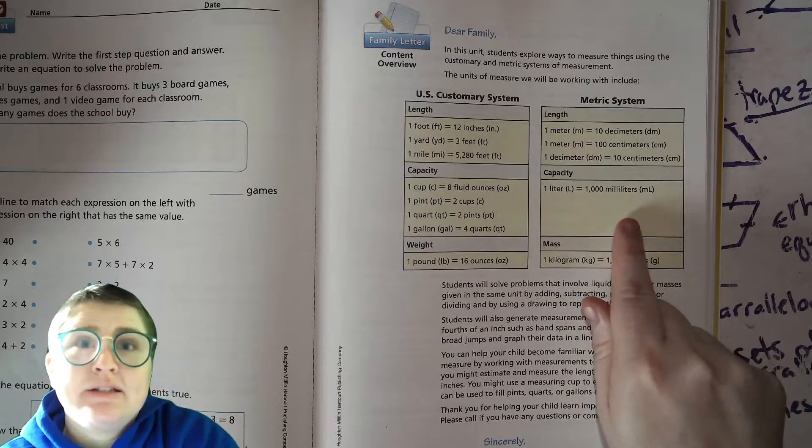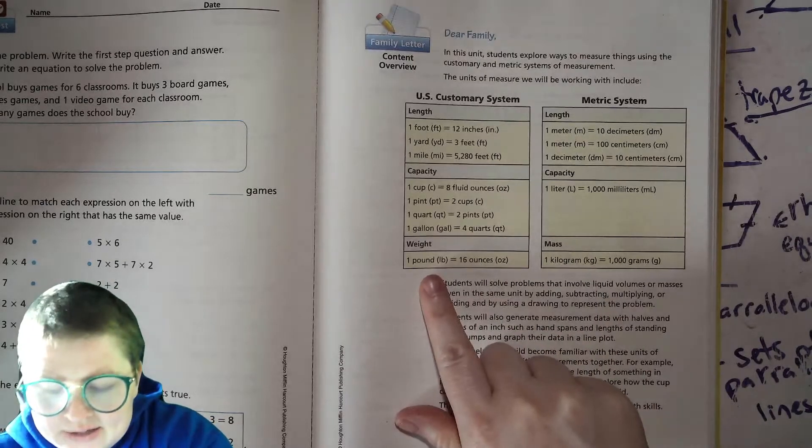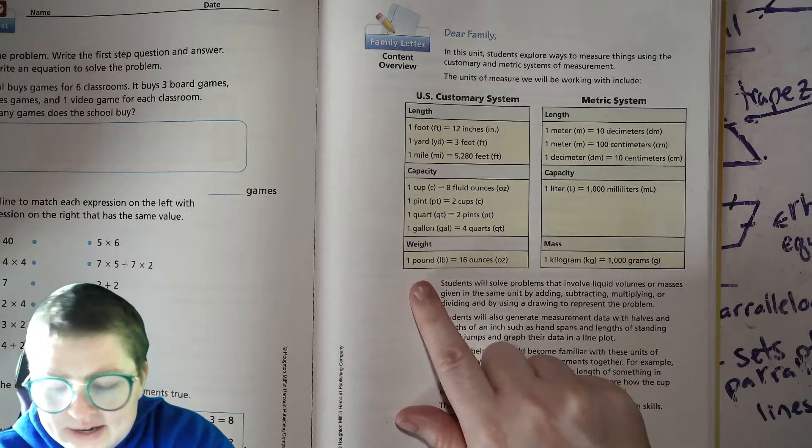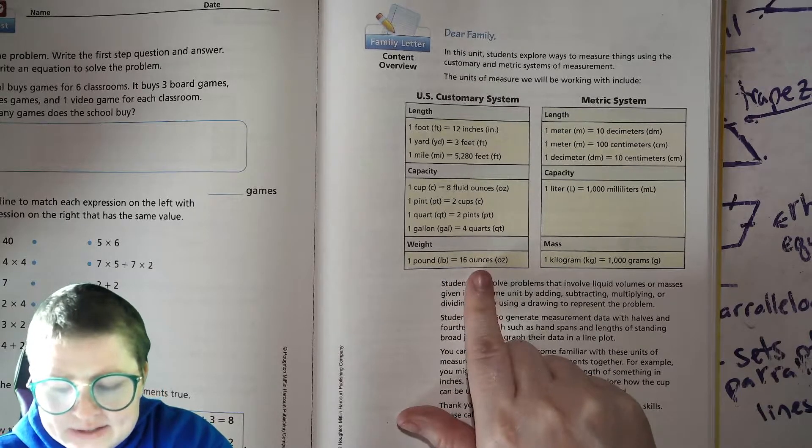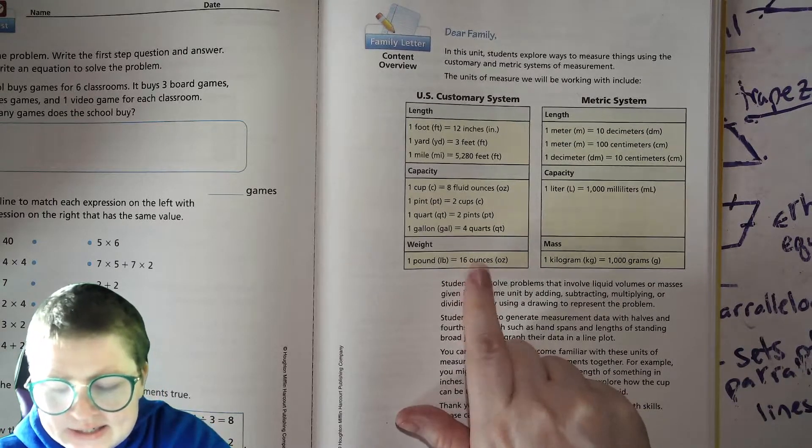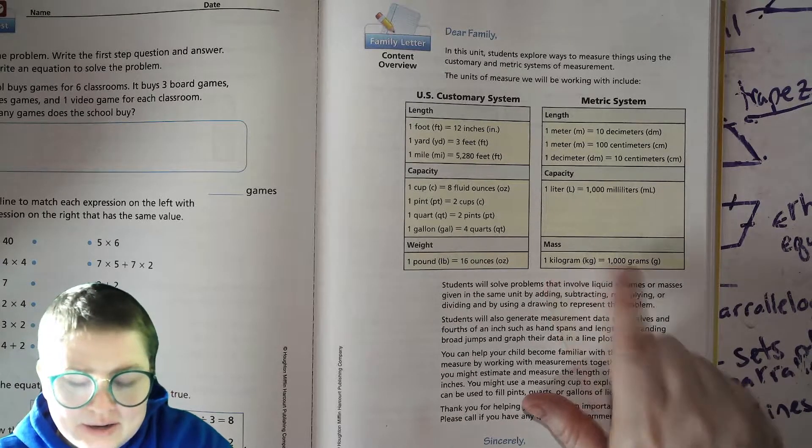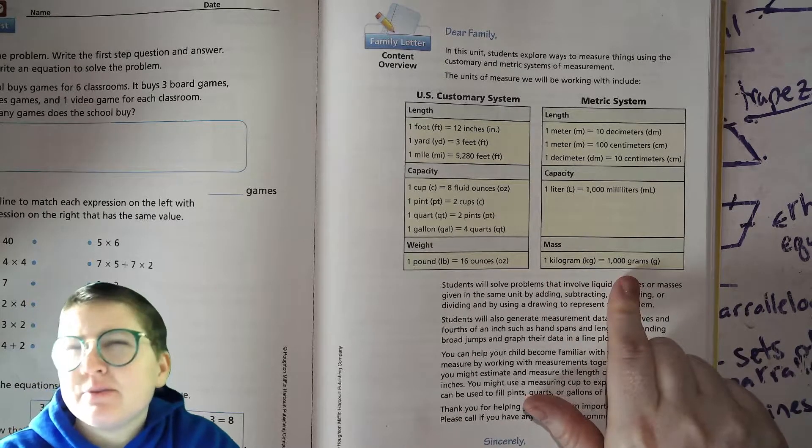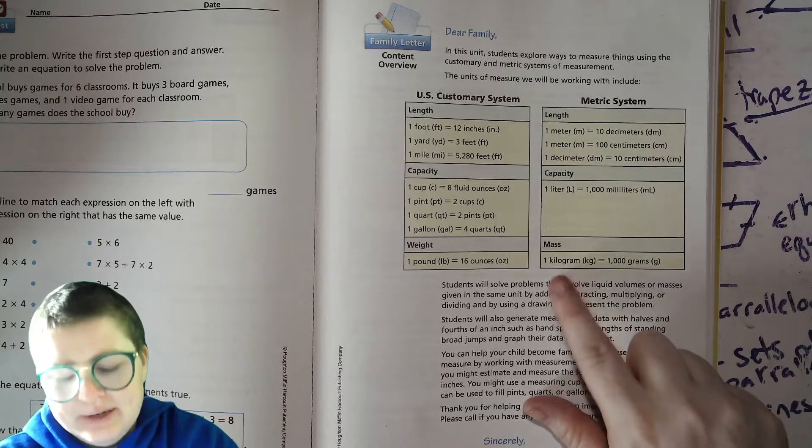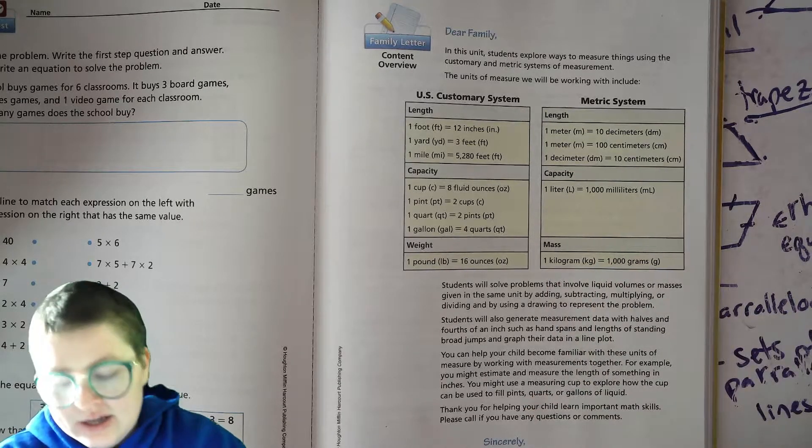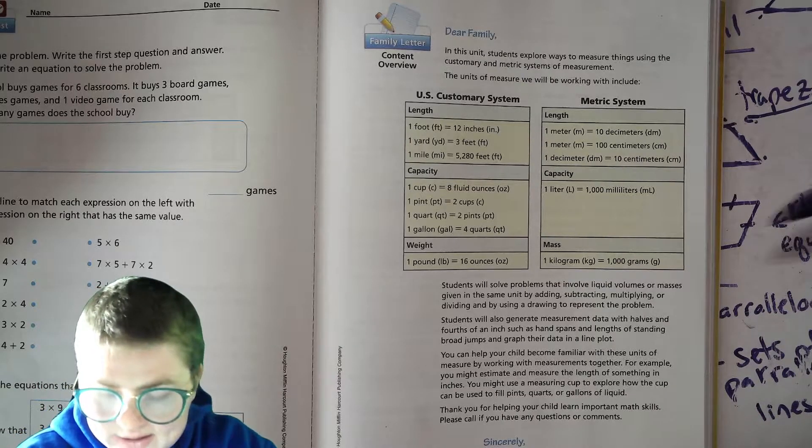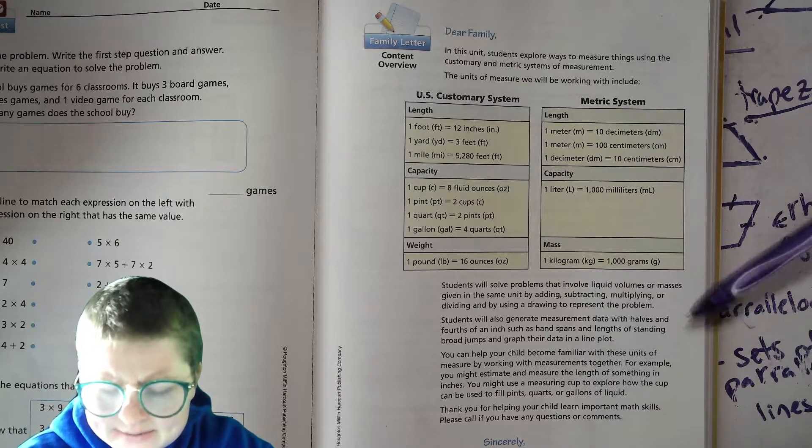You might buy your milk in liters and then you might take a dose of medicine that's in milliliters. And then in the customary system we have pounds and ounces. So 16 ounces are a pound. And then in the metric system 1000 grams, which is about the weight of a paperclip, is one kilogram and kilo means thousand.